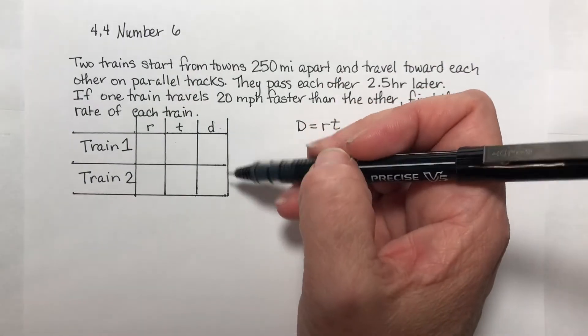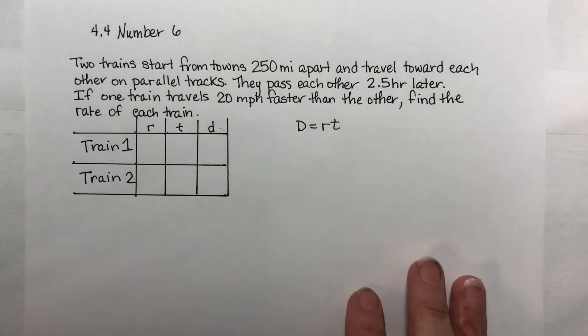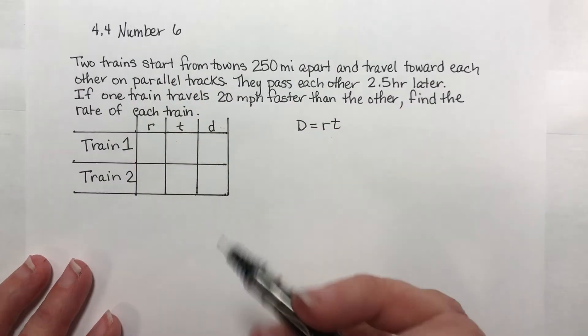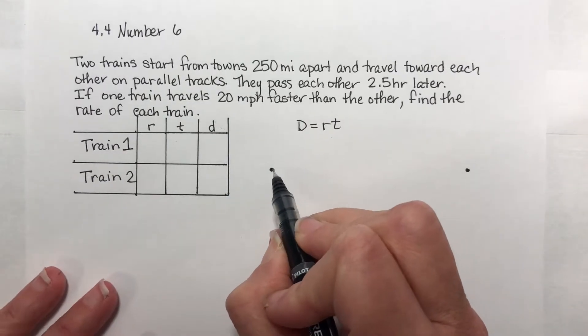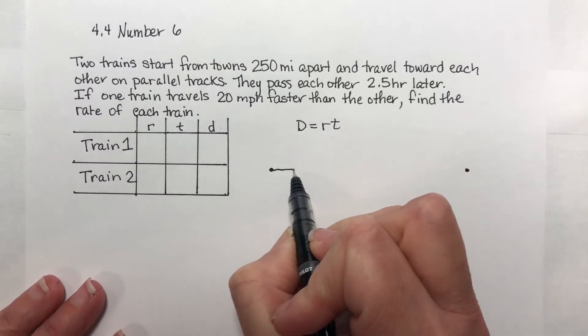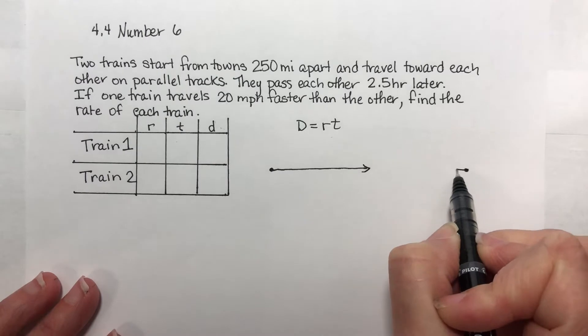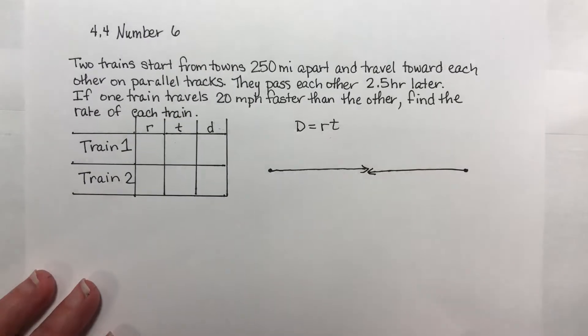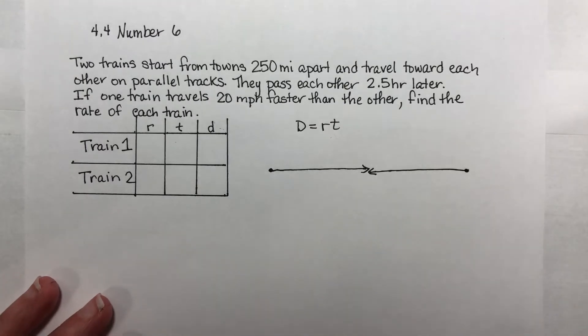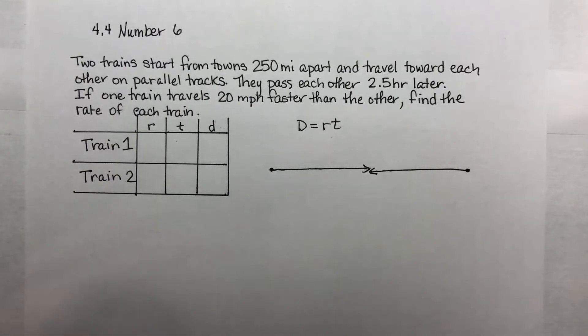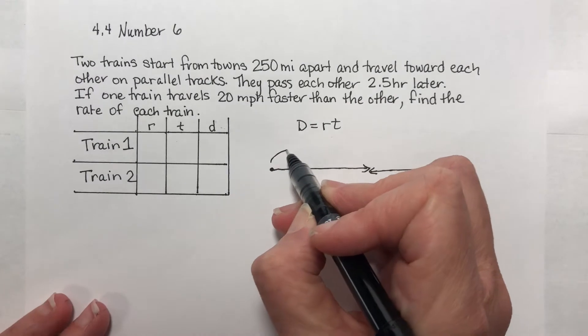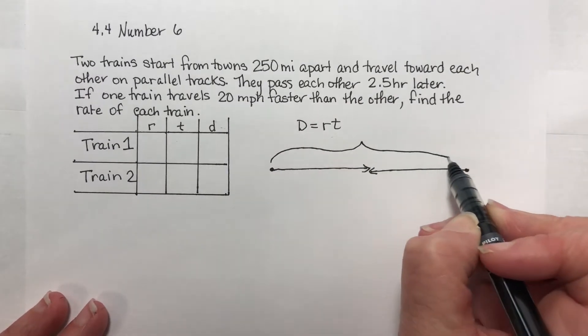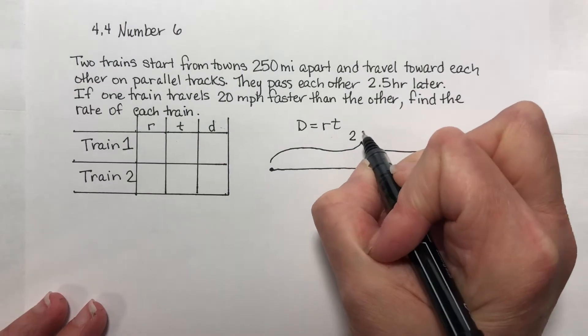Okay, they want us to fill out this chart and charts are useful, but I'm also going to draw a picture because the picture can help us visually understand what's happening. So I have two cities that are 250 miles apart. We're not really given much information except the distance between them. I have two trains on parallel tracks that are traveling toward each other.